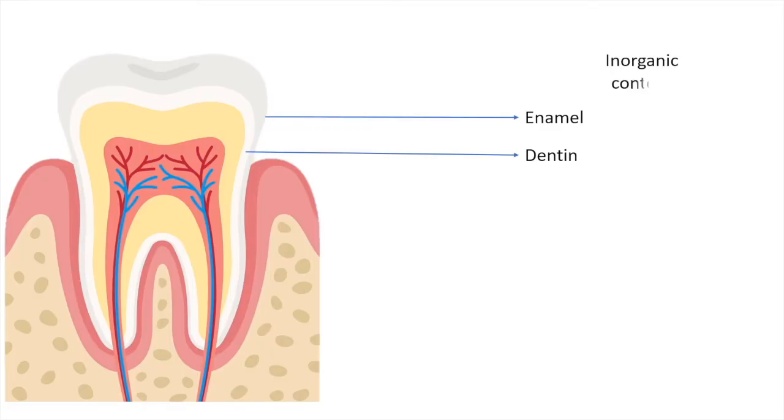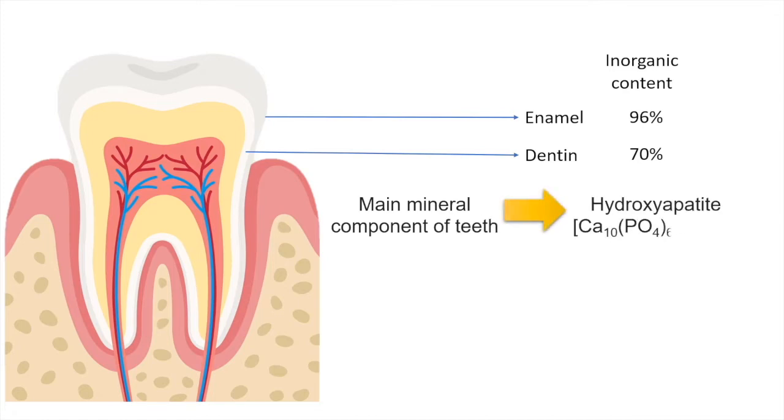Enamel is one of the hardest structures of the human body and it is constituted of 96% inorganic content. Dentin comprises 70% inorganic content.